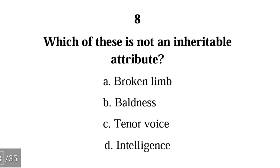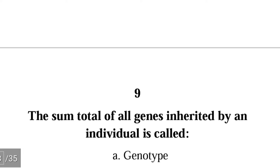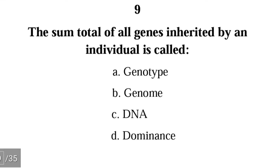Number eight: which of these is not an inheritable attribute — broken limb, baldness, tenor voice, or intelligence? The correct answer is A, broken limb. If you have a broken limb, especially from an accident, you cannot transfer this to your children.